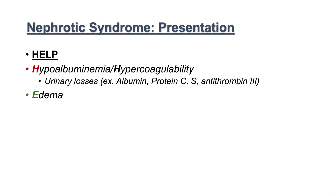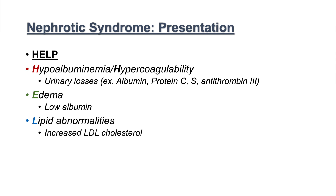The next one is E for edema, and edema is due to that state of low albumin. If we have low levels of albumin, we have decreased oncotic pressure — a decreased ability to reabsorb some of that interstitial fluid — leading to peripheral edema. The next one is L for lipid abnormalities. Generally, patients with nephrotic syndrome have an increased LDL cholesterol, and they also have lipiduria or oval fat bodies in their urine.